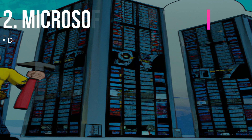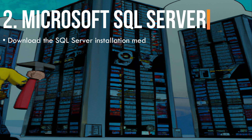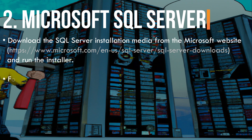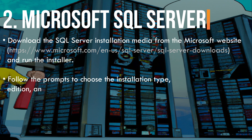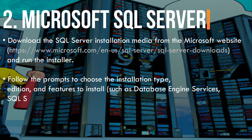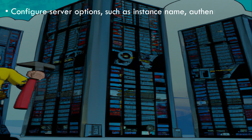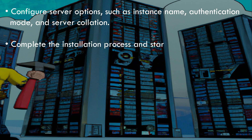Two: Microsoft SQL Server. Download the SQL Server installation media from the Microsoft website at www.microsoft.com/sql-server/sql-server-downloads and run the installer. Follow the prompts to choose the installation type, edition, and features to install — such as Database Engine Services and SQL Server Management Studio — then configure server options such as instance name, authentication mode, and server collation.